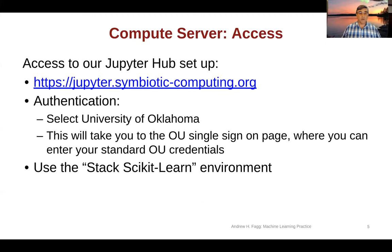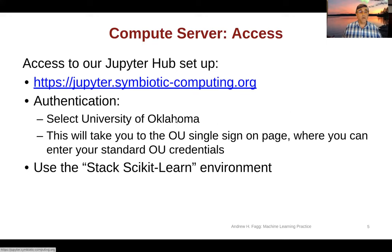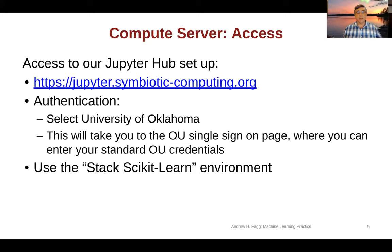Access to our JupyterHub is through this URL. There's a link from the main course syllabus to this as well. When you access this particular URL, it will ask you for an authentication source. It'll talk about CI login. What you will do is select University of Oklahoma, and once you do that, it will take you to the OU single sign-on page, where you can enter your OU credentials.